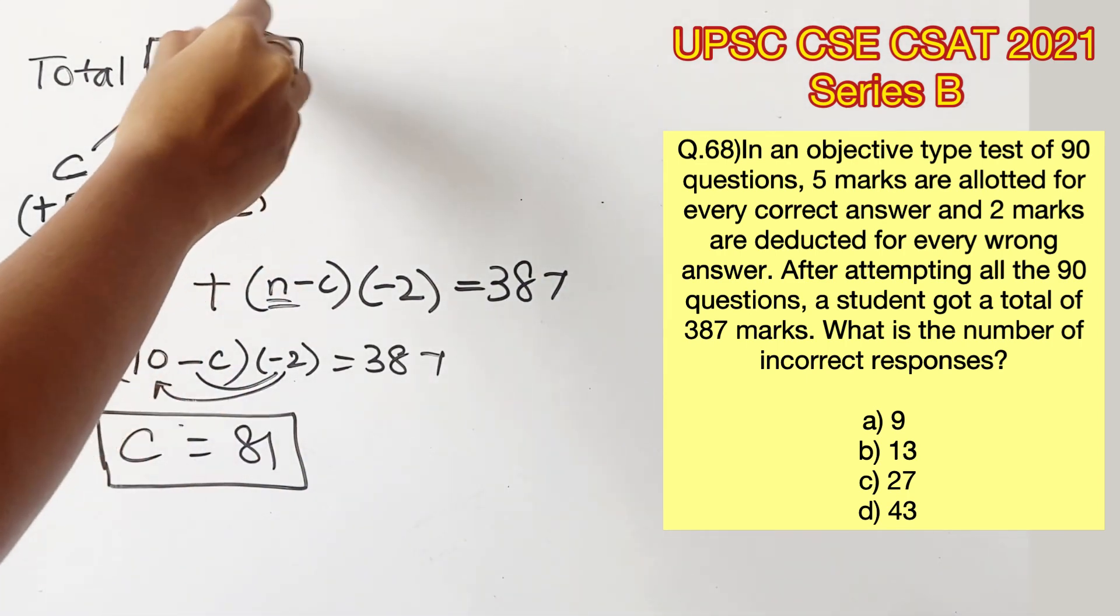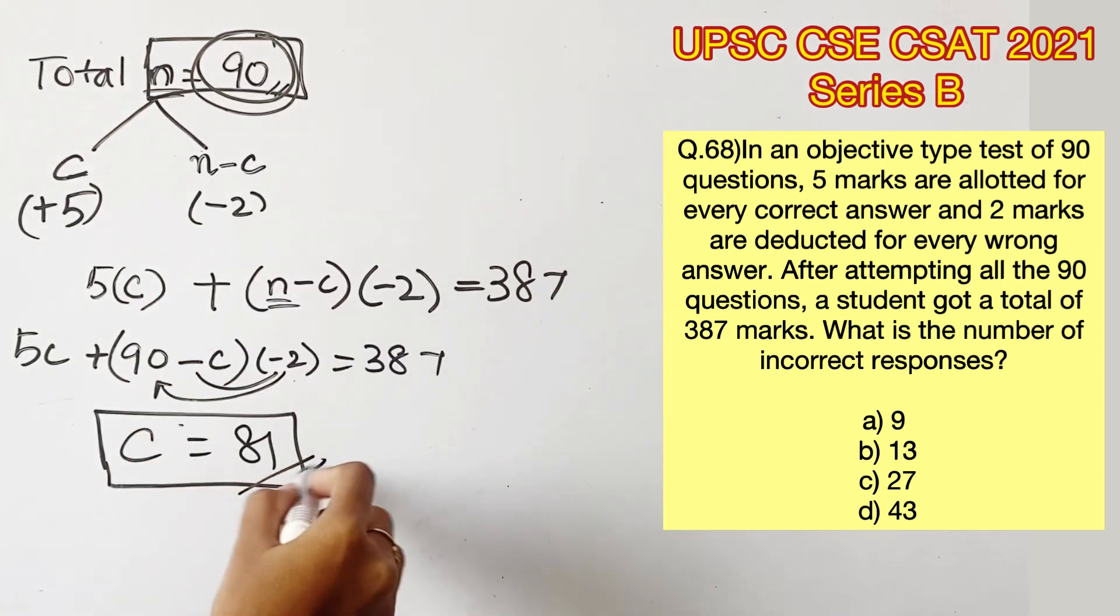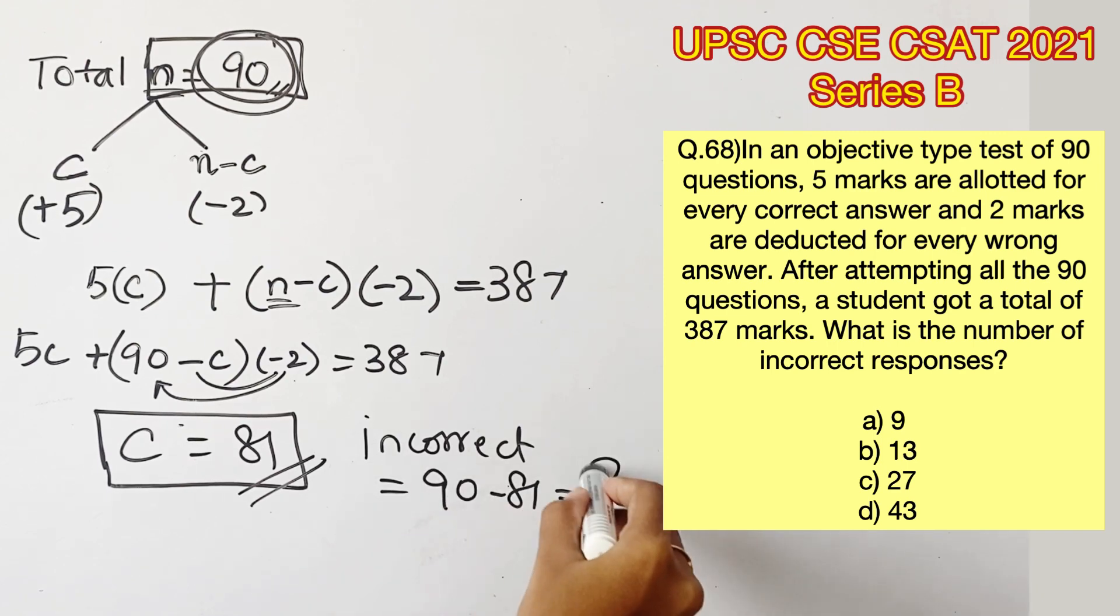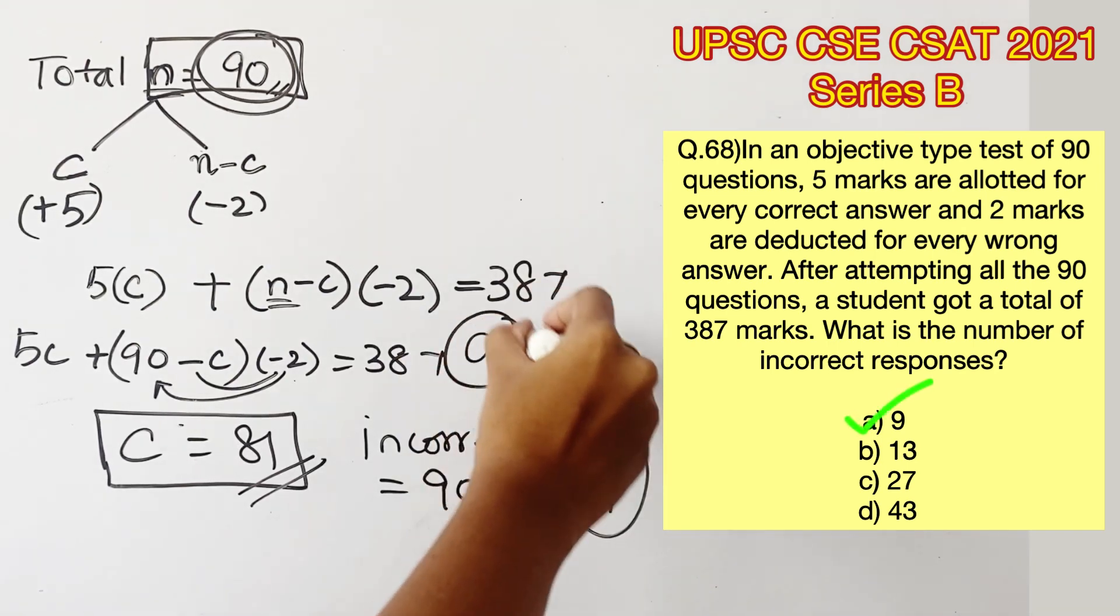Now we know that the total is 90 questions, therefore the number of correct responses should be subtracted from 90. The incorrect responses would be 90 minus 81, that is 9. Therefore, option A is the right answer.